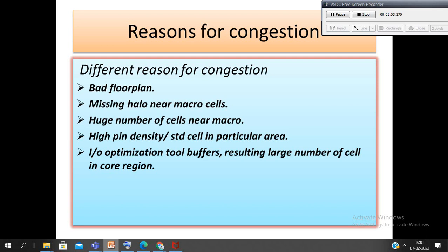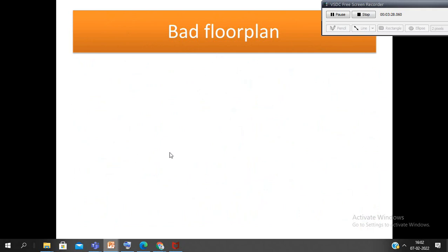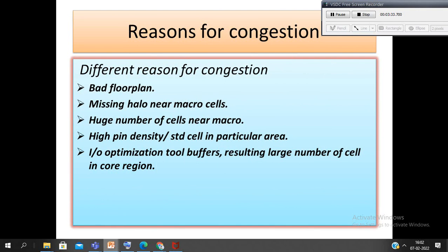High pin density on one edge of the block can also cause congestion. Too many buffers added for optimization in the post-CTS stage may cause congestion. High via density also due to the power mesh can cause congestion, and criss-cross I/O pin alignment near to the port can also cause congestion. So these are the main issues that can cause the congestion. We will check a few of the cases in the upcoming slides.